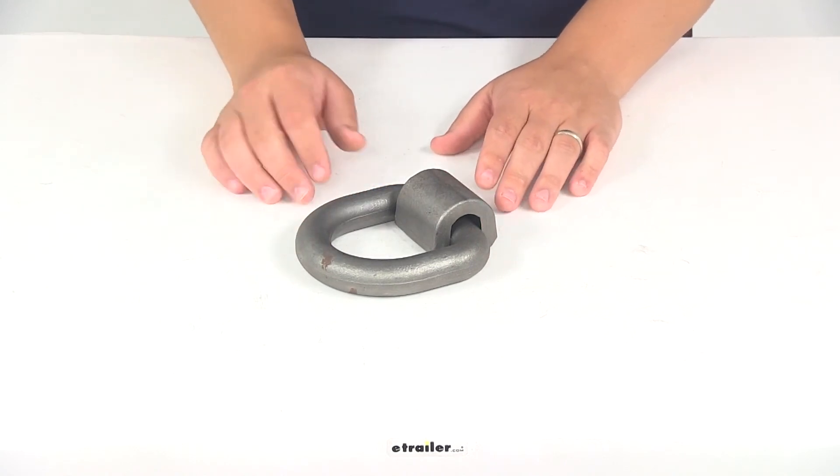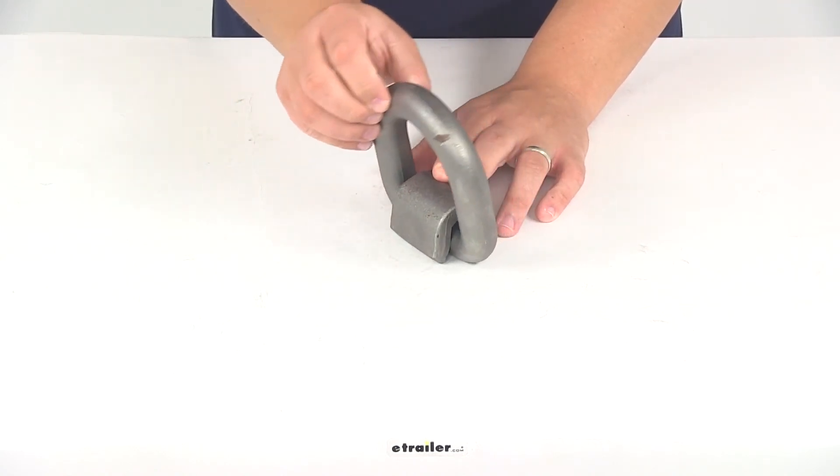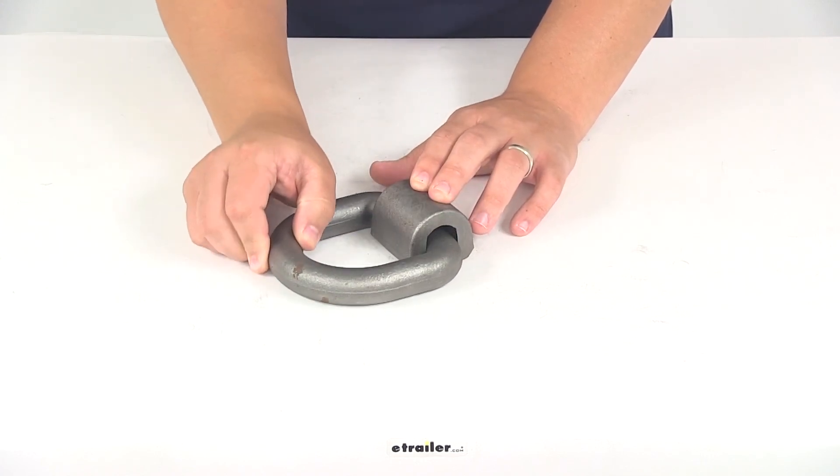That's going to do it for today's review of part number C83770, the Kurt heavy-duty D-ring tie-down anchor.